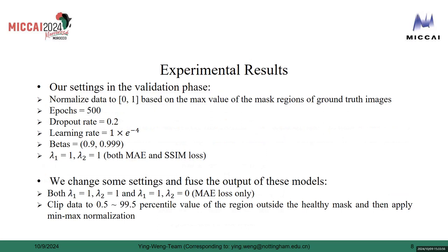Our settings in the validation phase: we normalize data to the range between 0 and 1 based on the max value of the mask regions of ground truth images. We set the maximum number of epochs to 500 and apply early stopping when the validation loss no longer decreases. We set the dropout rate equal to 0.2 in the bridge block and ensemble block.